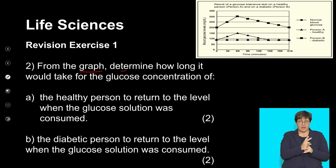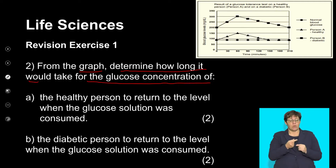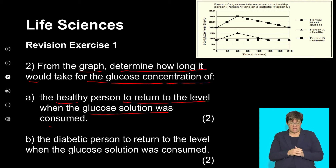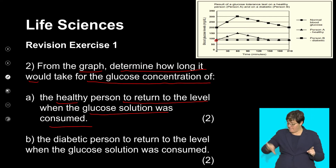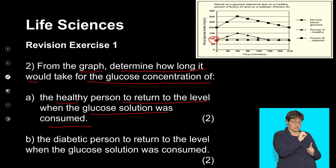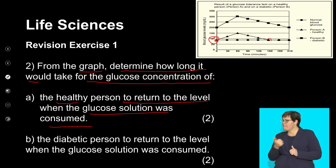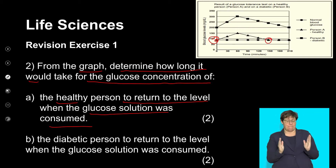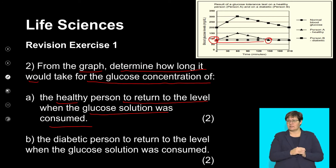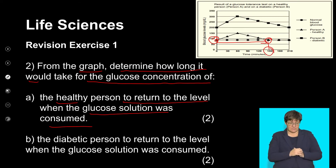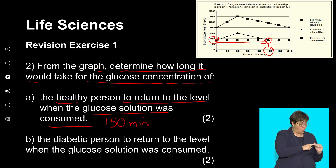From the graph, determine how long it would take for the glucose concentration to return to the starting level. For the healthy person: the initial amount was just under 100 milligrams, and it obviously returned to that value after a specific time period. We've got to look at how long it took to get back to normal. This was approximately, if you plot that down, 150 minutes. So it took the individual 150 minutes to bring down blood sugar levels back to what they initially were.